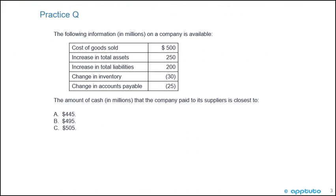The following information in millions on a company is available: cost of goods sold, 500; increase in total assets, 250; increase in total liabilities, 200; change in inventory, negative 30; and changes in accounts payable, negative 25. The amount of cash in millions that the company paid to its suppliers is closest to A, 445; B, 495; or C, 505.